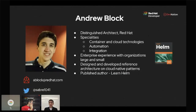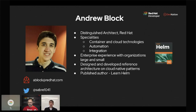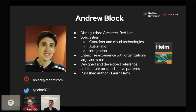My name is Andrew Block. I'm a distinguished architect at Red Hat. I've been working in the Kubernetes space for probably about five and a half years, before it was even Kubernetes 1.0. I specialize in containers and cloud technologies, automation and integration, and I have experience with customers from the small guys to Fortune 5. I also like to write and teach — this year I was able to get a book out on Helm, which is a package manager for Kubernetes.